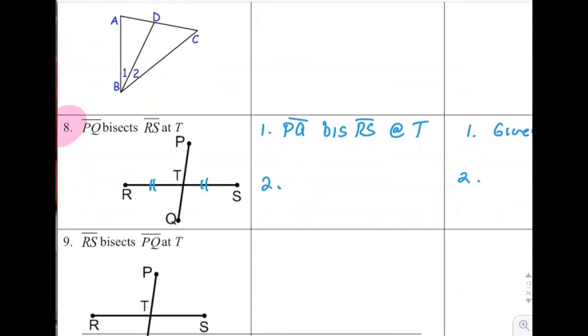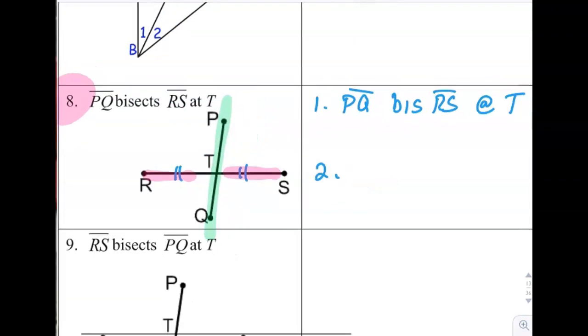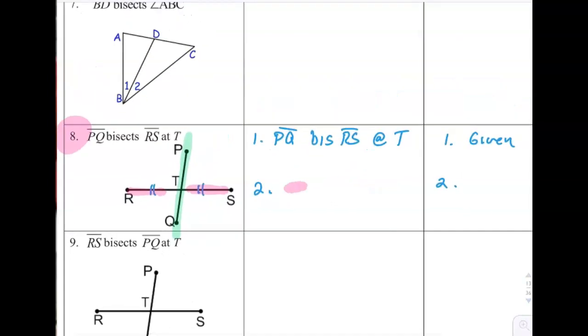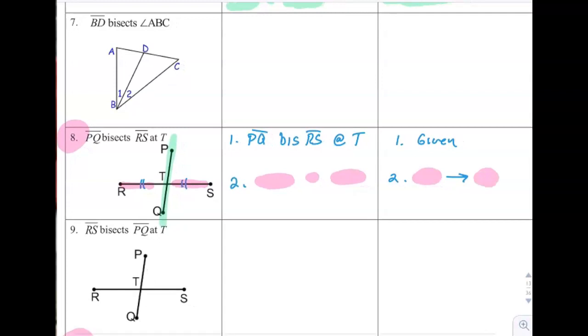Number eight, PQ bisects RS. So be careful here. PQ is the bisector, and RS is being bisected. So here it's going to be, after the given, you would write RT is congruent to ST because a bisector implies two congruent segments.